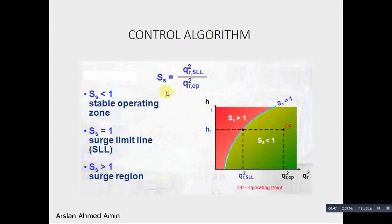Now we define the parameter in the controller which is the surge parameter, which is the ratio of Qr squared SLL over Qr squared operating. The ratio of this point against a certain operating point. You see that this is the ratio.